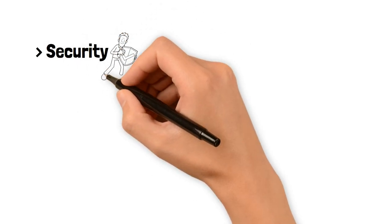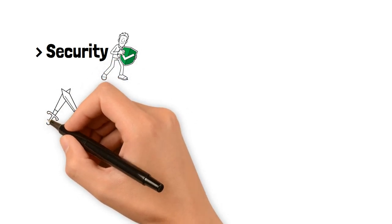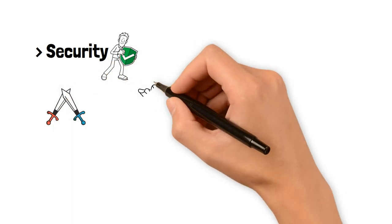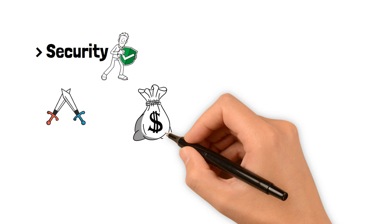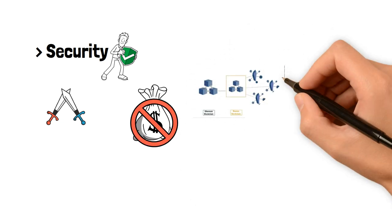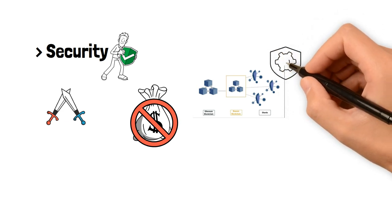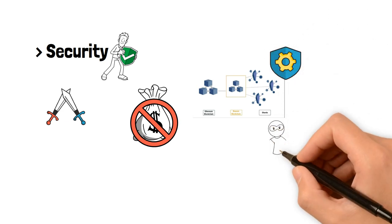Security is also enhanced in Ethereum 2.0. With proof-of-stake, attackers would need to acquire a significant amount of Ether to compromise the network, making it economically unfeasible. Additionally, the introduction of shard chains improves resilience against attacks, as each shard operates independently, limiting the impact of any potential breach.